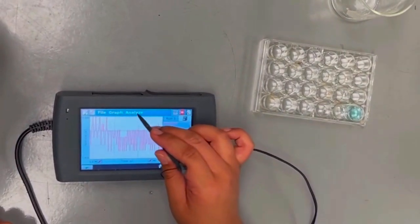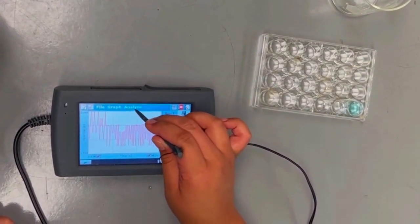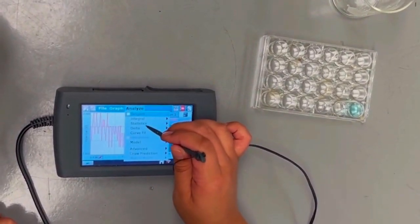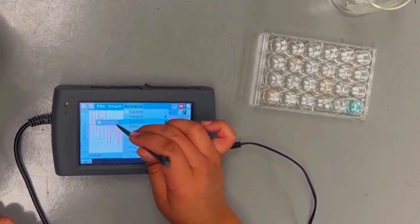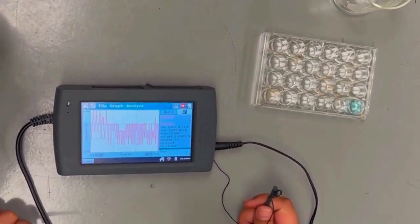To find the mean value of the voltage, click Analyze, then Statistics. Check all boxes of the three trials to show you individual data for each trial. Record the mean value for each trial.